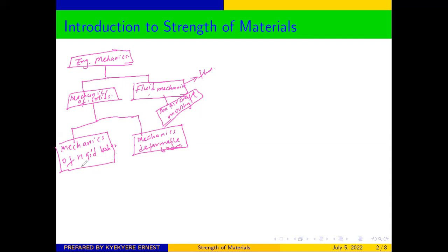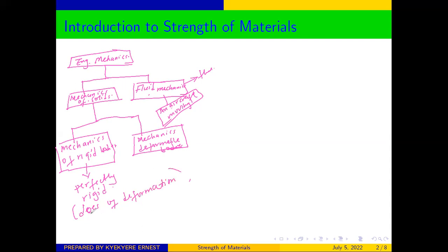In Mechanics of Rigid Bodies, it is assumed that the bodies involved are perfectly rigid. And because the bodies are perfectly rigid, it is assumed that the force applied to the body does not cause any form of deformation. That is our assumption in the mechanics of rigid bodies.